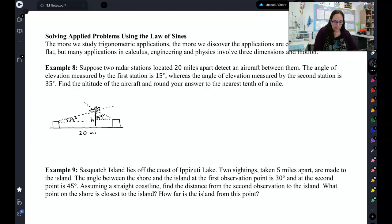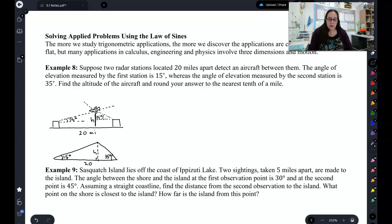So I have two angles here and I have a side. If I draw the triangle that I see, I've got this, this, this, this. I know this is 20. I know this is 15. I know this is 35. And this height or the altitude is what I'm trying to solve for.